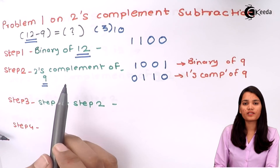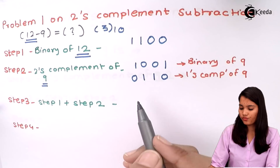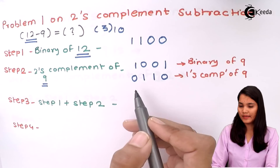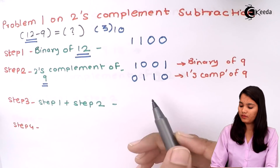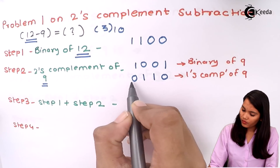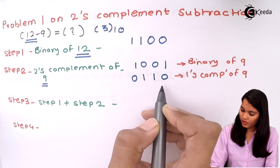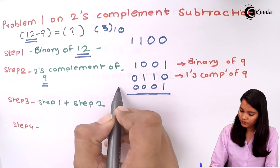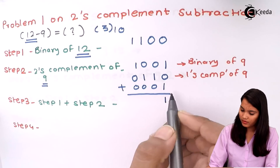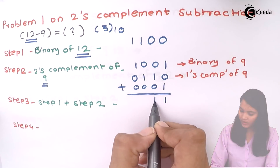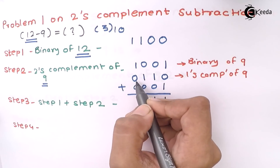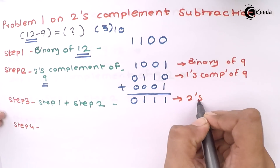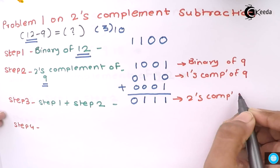The next step is to find the two's complement by adding 1 to the one's complement. The one's complement of 9 is 0 1 1 0. Adding 1: 0 plus 1 gives 1, 1 plus 0 gives 1, 1 plus 0 gives 1, and 0 plus 0 gives 0. So the two's complement of 9 is 0 1 1 1.